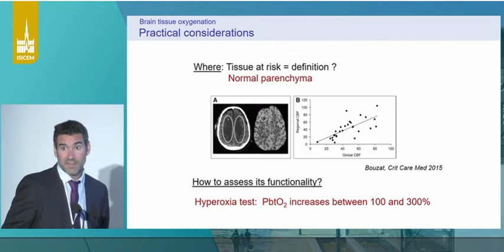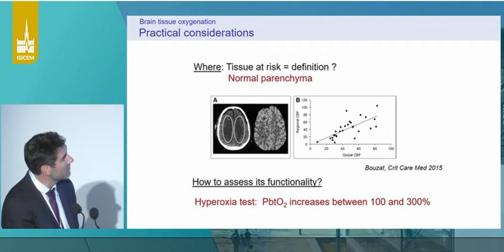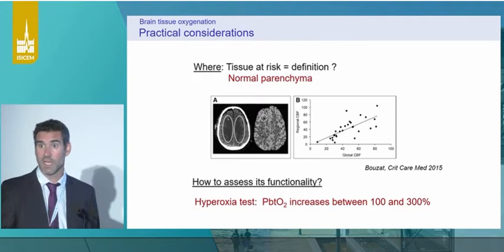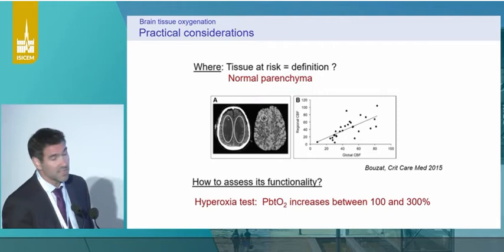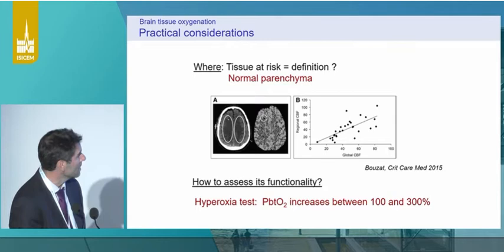Where to put the probe? Ideally the probe should be in the tissue at risk, but in clinical practice nobody knows where the tissue at risk is. I would suggest putting the catheter in normal parenchyma, because there you have a good correlation between regional CBF and global CBF. When you manipulate CBF regionally, you expect global changes. To assess its functionality, you can perform an oxygen reactivity test — PbtO2 should increase when you put FiO2 at 100% with an increase of 100–300%.